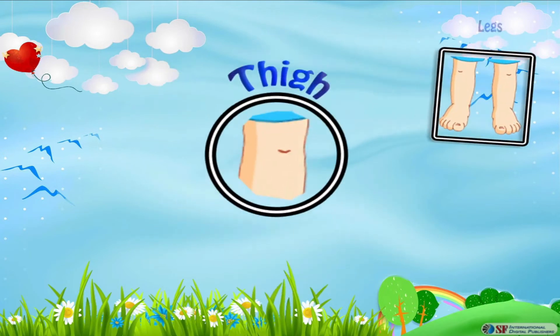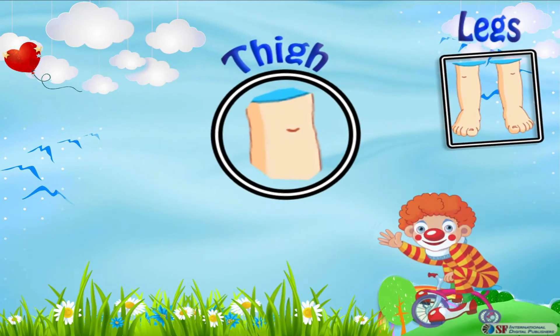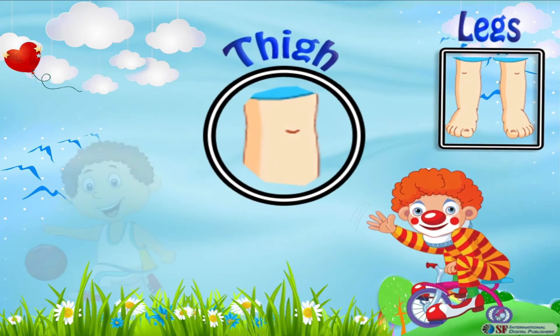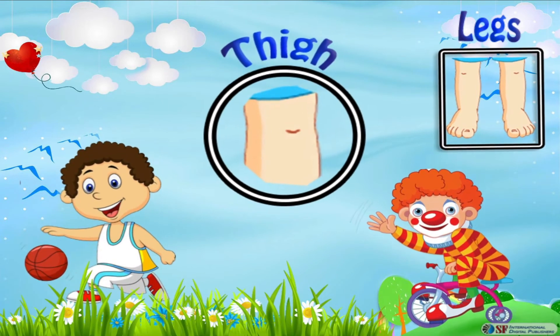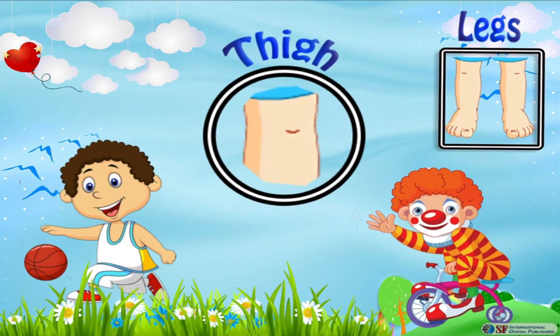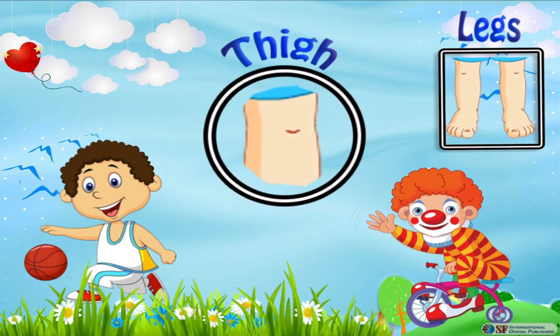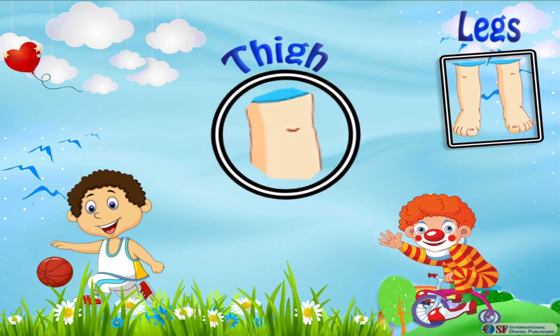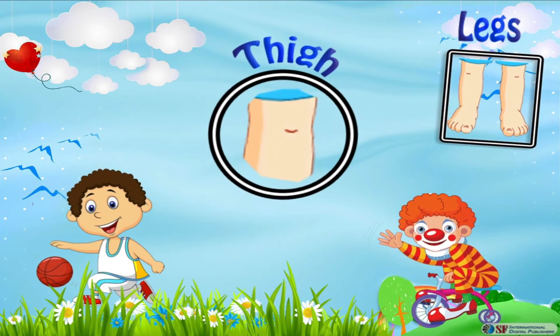The thigh is the part of our leg between the hip bone and the knee joint. Its role is to support the weight of the body. It also helps our leg to move. We have a pair of thighs, one for each leg.